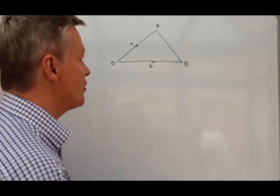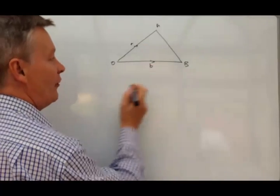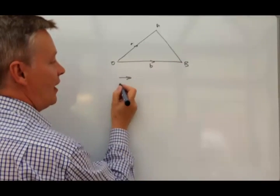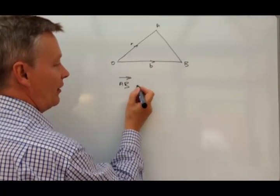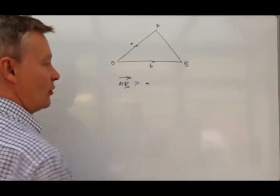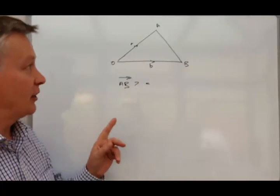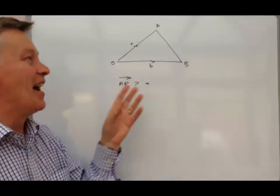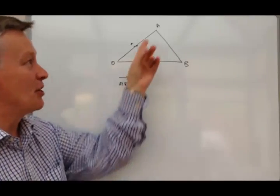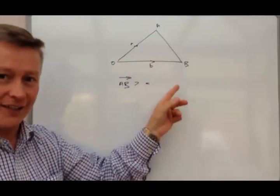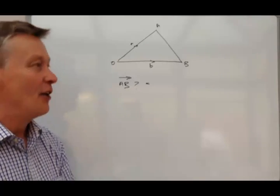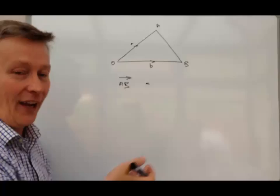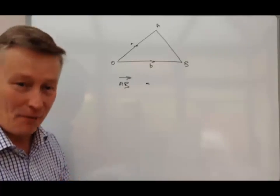What they want us to do is to work out the value of the vector AB. Well you would think you'd just be able to go from A to B. No, you can't. The reason you can't is because you don't know that vector, so unfortunately, as with a lot of these type of questions, you've really got to go around the houses to get from A to B.